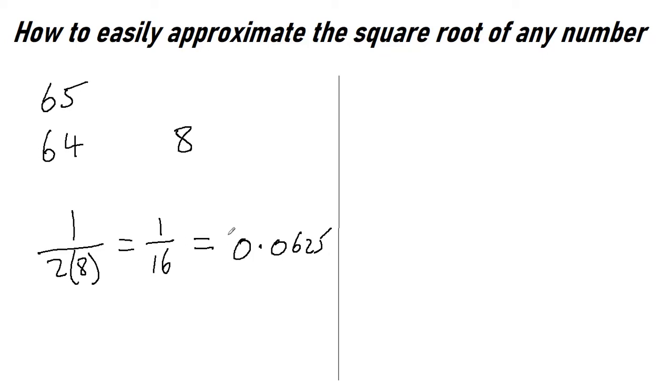So our approximate square root of 65 is 8 plus 0.0625 which is 8.0625. Let me just check and see what the calculator makes that. Square root of 65 is 0.0626. So again that's pretty close. You'll find that the further these two get apart then the less accurate this will be. But it is still pretty good.